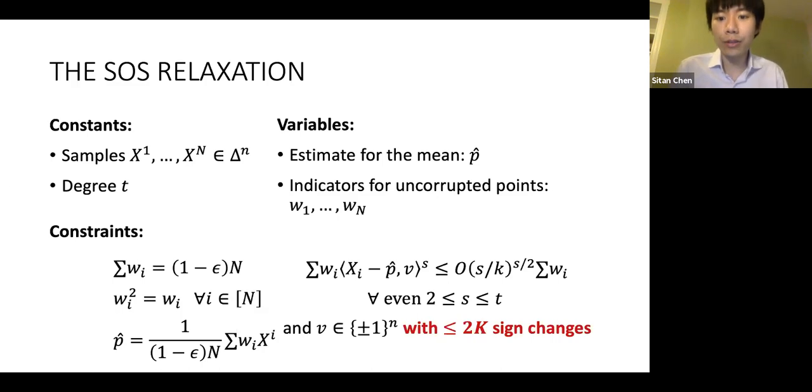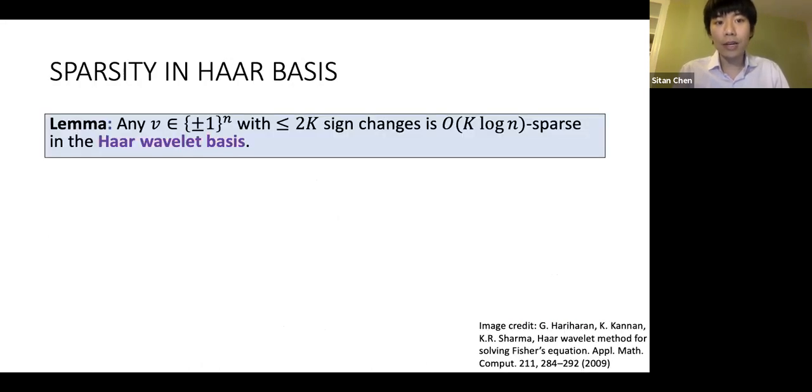The key workaround is to pass to another appropriate convex relaxation as follows. The key observation is that any bit stream with a bounded number of sign changes is actually sparse on a different basis.